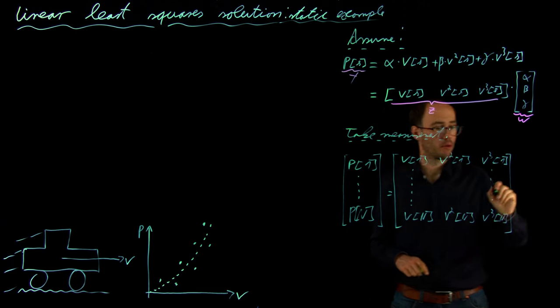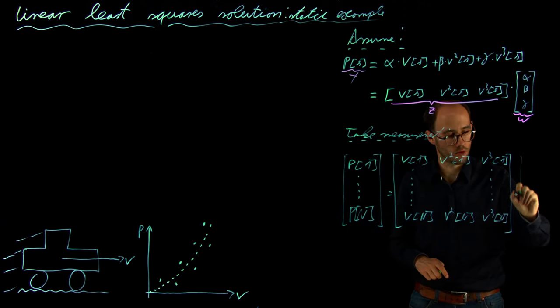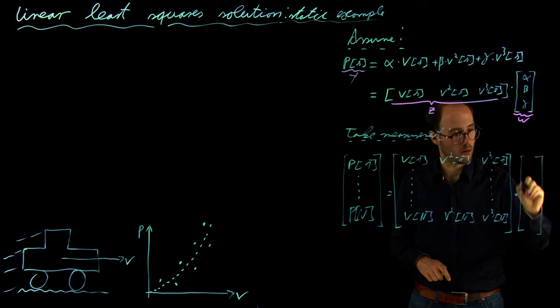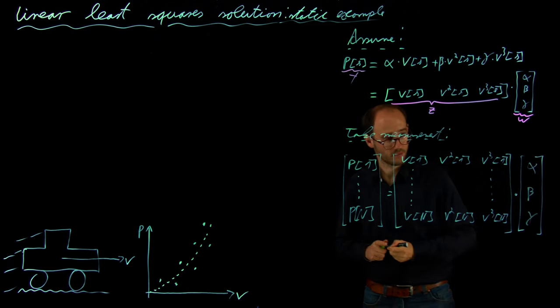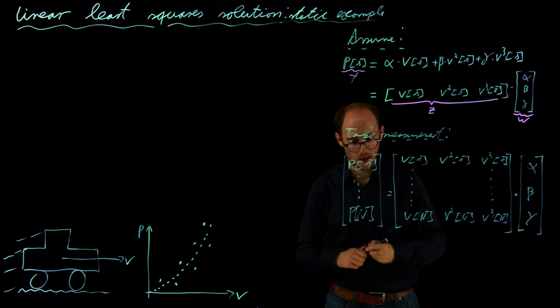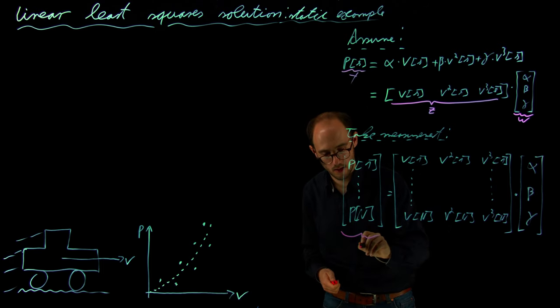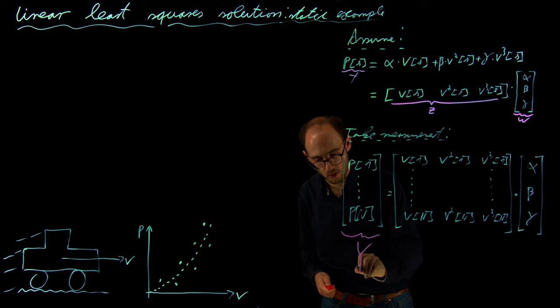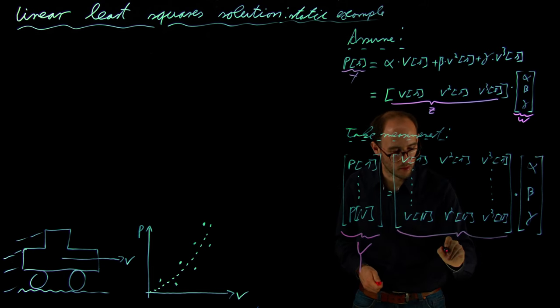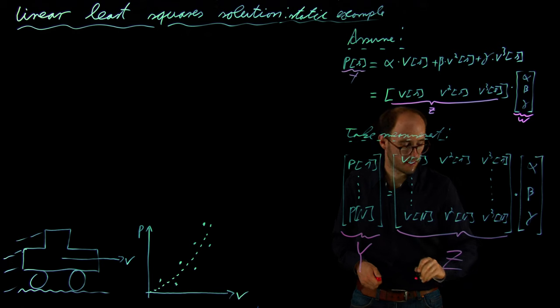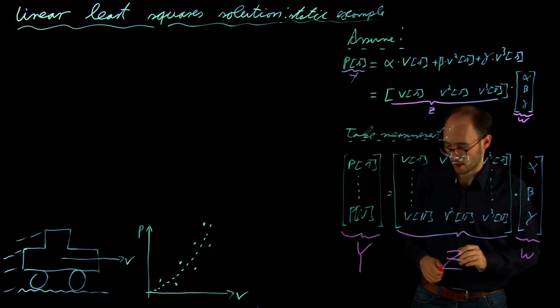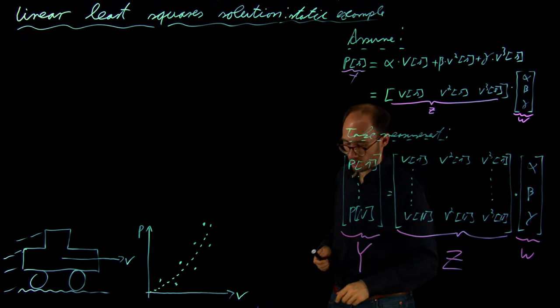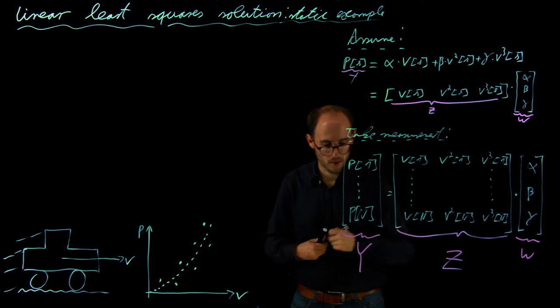And we multiply the regressor matrix as usual with our parameter vector alpha, beta and gamma. So this again makes measurement vector y is equal to regressor matrix Z and parameter vector w. And how we can solve this, we have seen in the previous video.